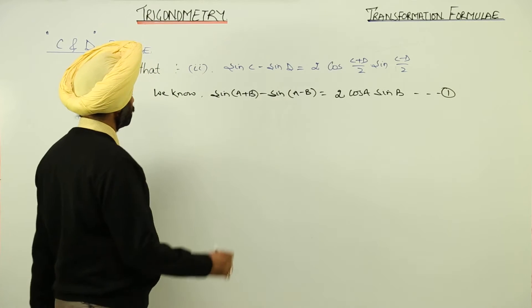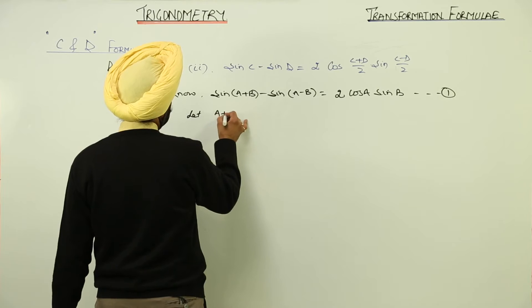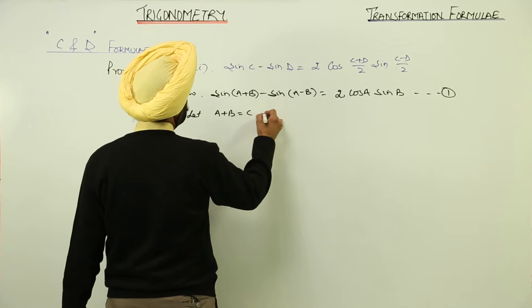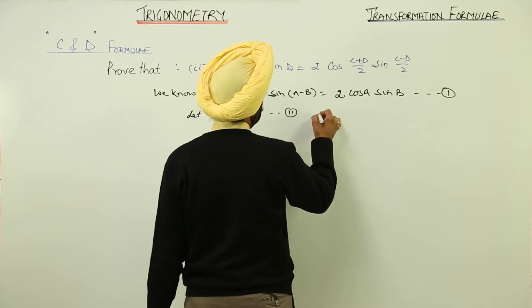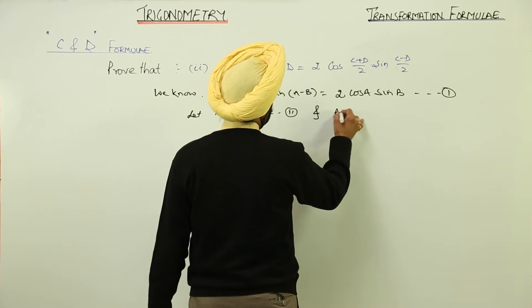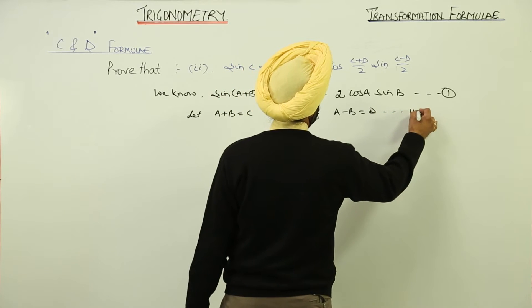Is it clear? Now again, same procedure. Let A + B = C as equation 2, and A - B = D as equation 3.